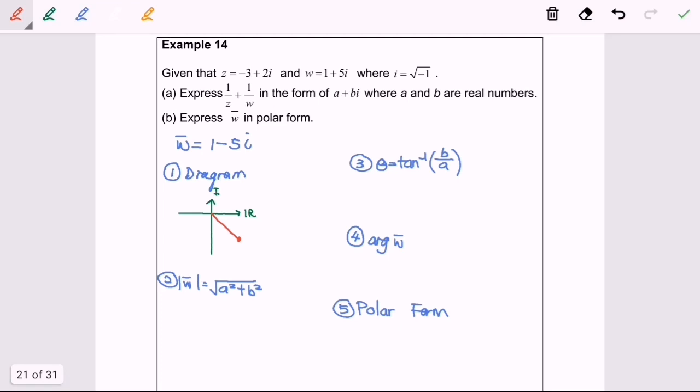Next, we are going to find the modulus of the conjugate of w. So the modulus of conjugate w will be equal to square root of 1 plus 25. So the modulus of conjugate of w will be equal to square root of 26.